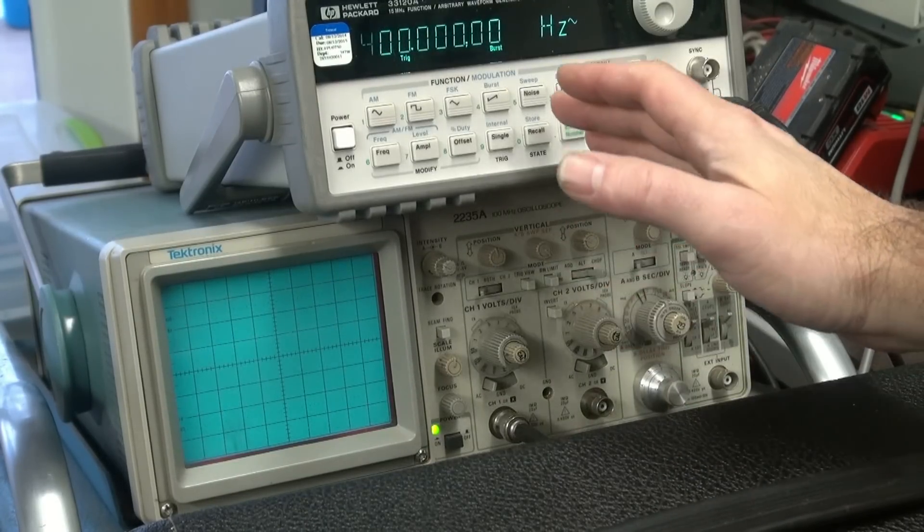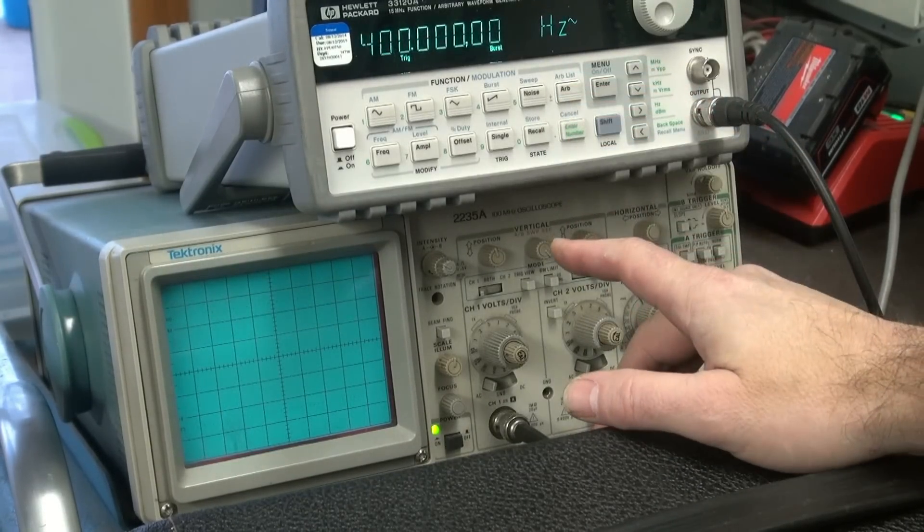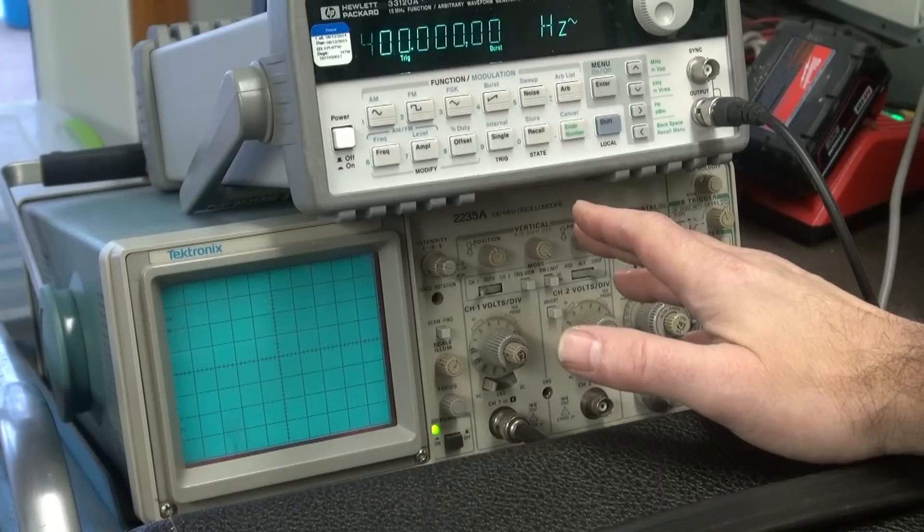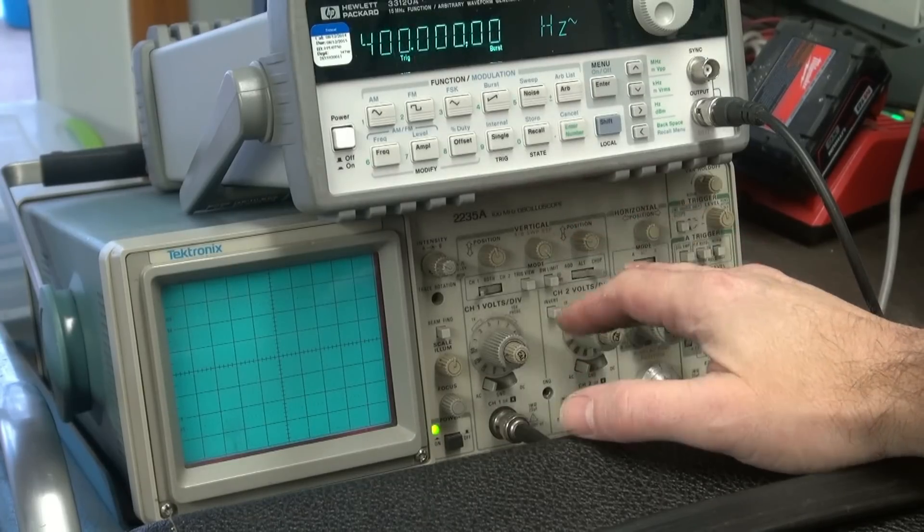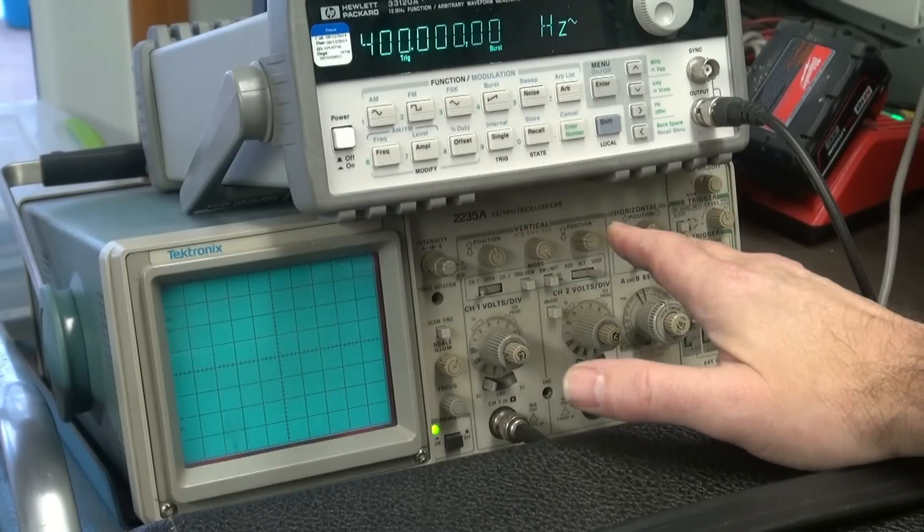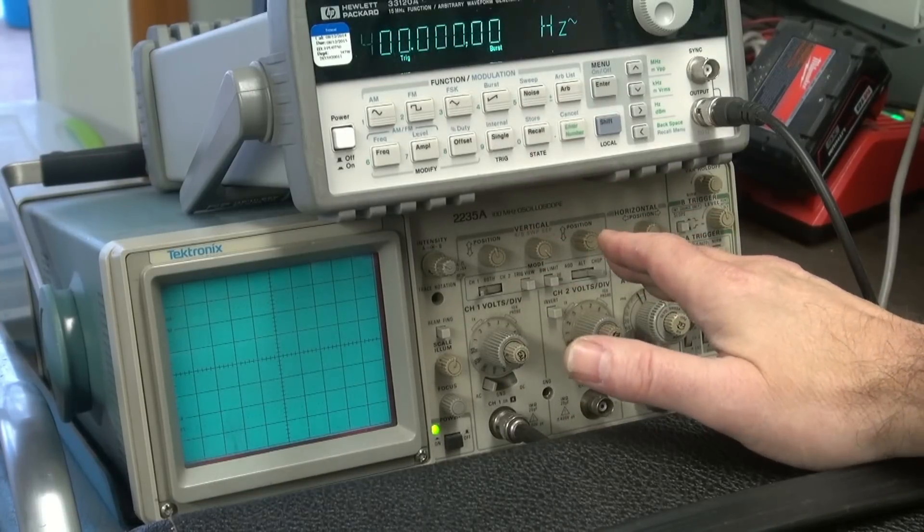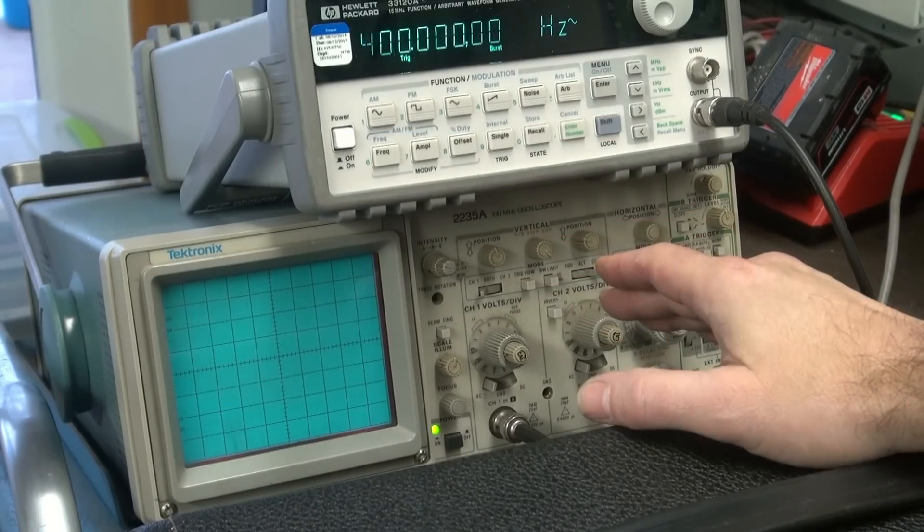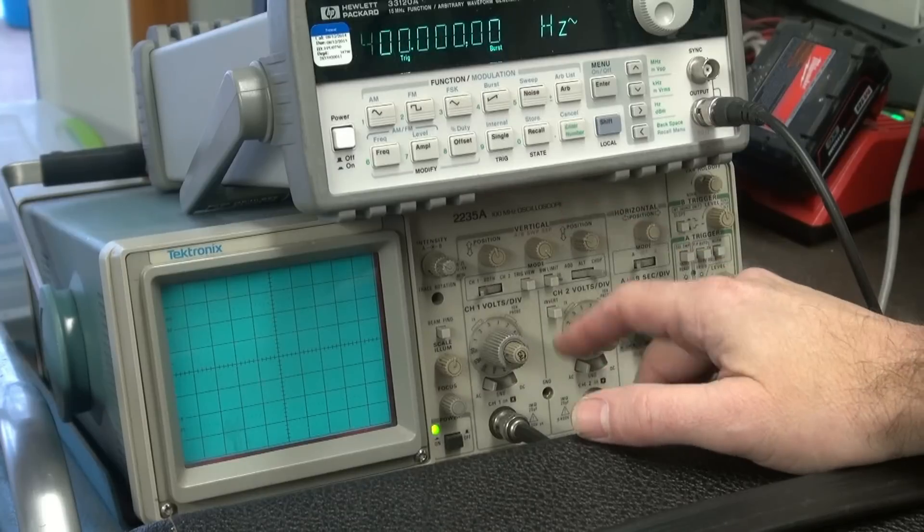Alright so what I have here is an HP 33120A arbitrary waveform generator. Yeah it's pretty crazy. But you can find an old pulse generator, old HP style on eBay for about $50 to $100 and you can do the same test.